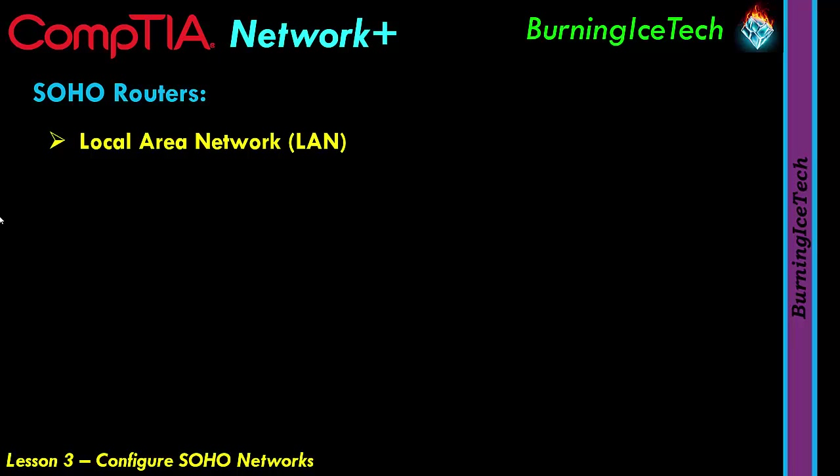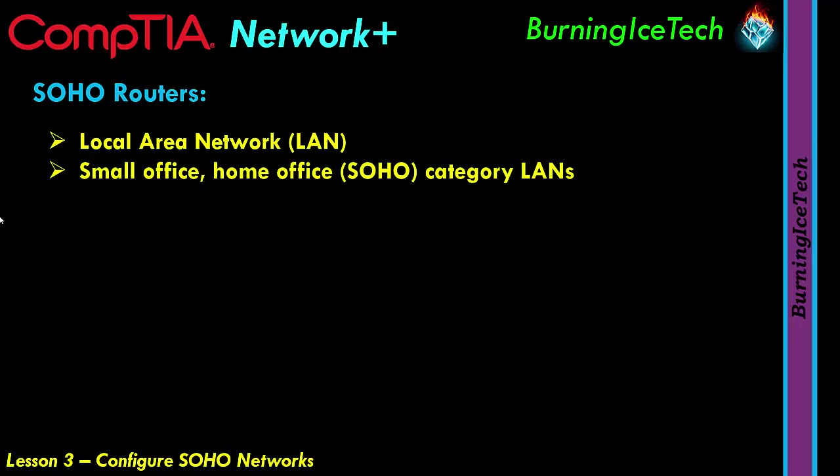Generally, as long as all the machines are in one location and connected via Ethernet or wireless, that's considered a LAN. Looking specifically at the type of LAN in a SOHO environment, it's a category of LAN with a small number of computing hosts that typically rely on a single integrated appliance for local internet connectivity.